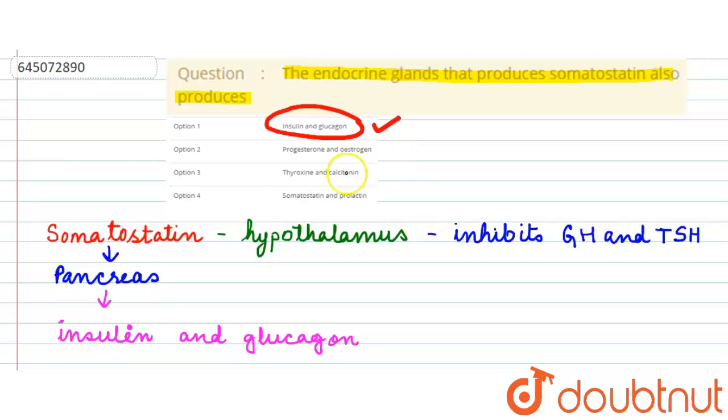That is why it is a wrong option. Then we are having thyroxin and calcitonin, which is secreted from the thyroid gland. Again, it is a wrong option. And the last one says somatostatin and prolactin. Again, it is a wrong option because somatostatin is not a gland, it is a secretion of a gland. So that is why it is a wrong option.